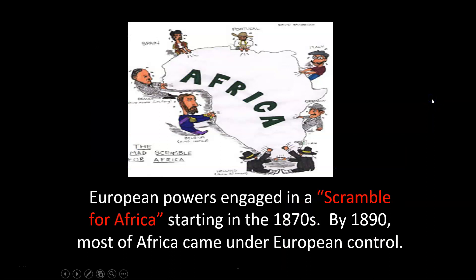What happened was the scramble for Africa, and this political cartoon summarizes it really well. European nations, starting in the 1870s, all wanted to get a piece of Africa. And by 1890, most of Africa came under European control. The Europeans swooped down to Africa very quickly. You can look at all of these European nations — I want a piece, I want a piece. I don't know why the Italian guy looks like Mario.